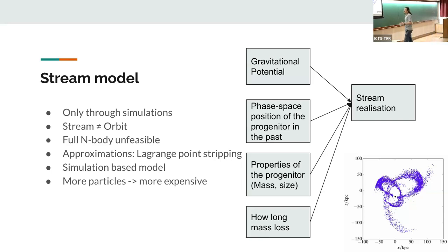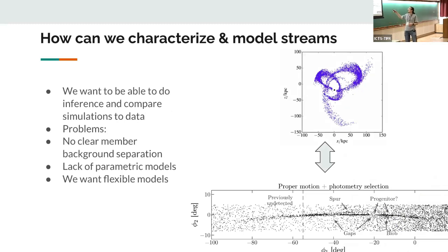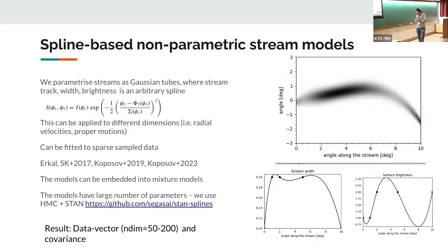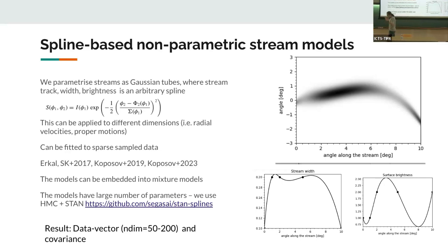Now the question is, this is the model — how do you compare it to the data? There are a few issues. In the data, we don't clearly know which star is necessarily a member and which is not, because we don't have spectroscopy for each star. Furthermore, this stream can't be described by a single parametric model — some kind of parabola or constant width — so it really needs a flexible model that also takes into account contamination, essentially a mixture model. So basically, that's what we came up with a few years ago: how to fit streams using non-parametric spline-based models.